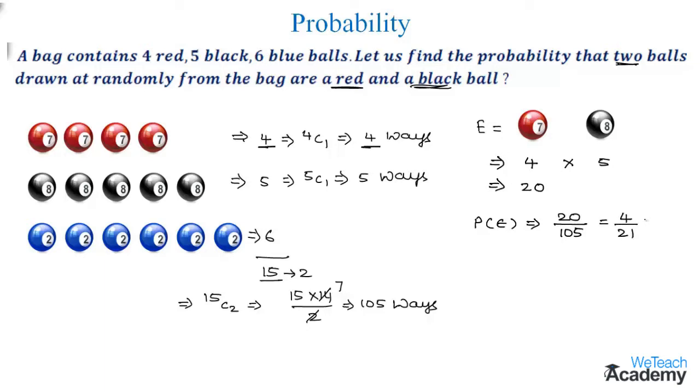So the number of required ways would be 4 by 21. This is how we solve an example on probability. Hope you understood the concept. Refer to more videos on probability on our channel British Academy. Have a good day.